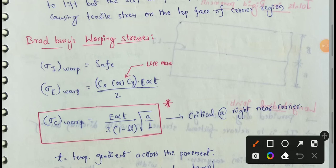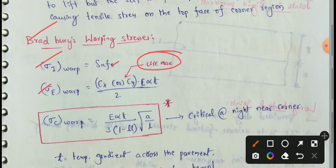Warping Stresses — Bradbury's Warping Stresses formula covers interior loading, edge loading, and corner loading. Warping stresses at the edge: the formula uses Cx or Cy — whichever is maximum — multiplied by E·σ·T divided by 2. Here Cx is the coefficient based on Lx divided by L in the desired direction.